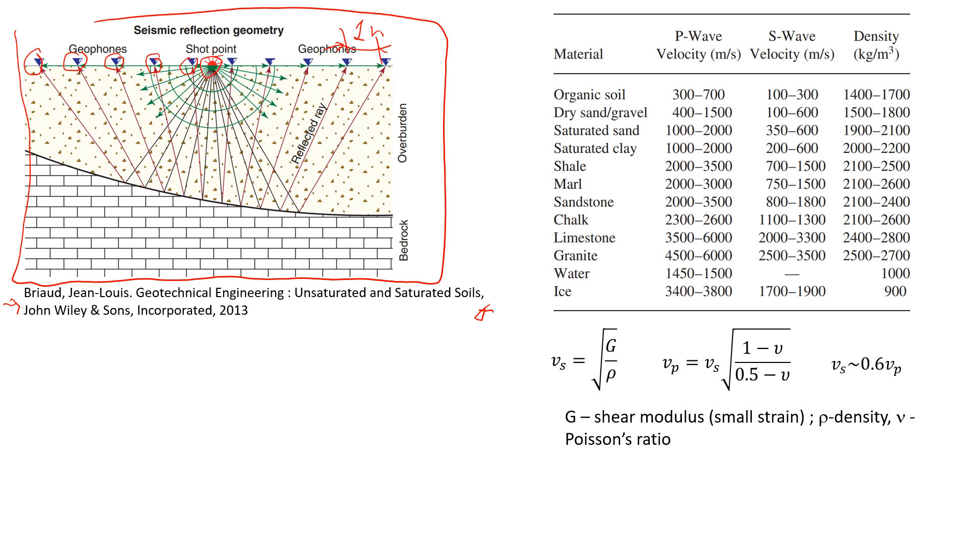So in this case, it's a shot point. So it can be a little blast or it can be like you can hit it with a big hammer. So once you hit the ground, it will generate waves. And waves will start propagate through soil mass, rock mass. So when they come to the boundary between two different strata. So here, for example, bedrock, and this is overburden, maybe soil.